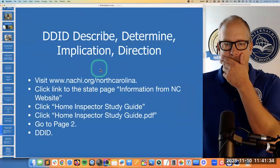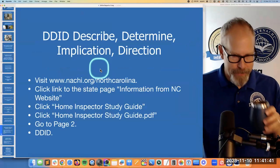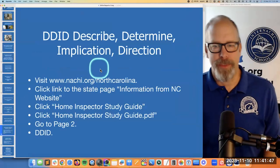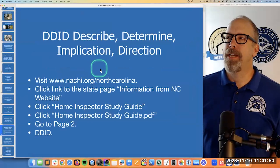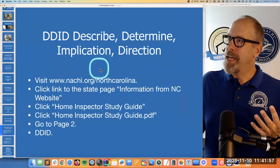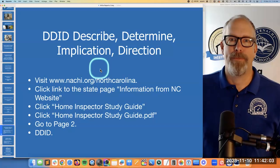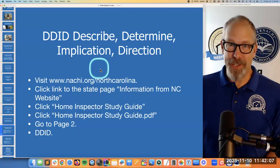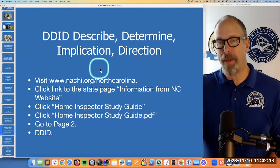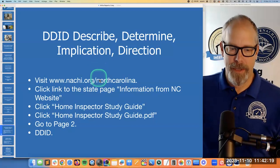DDID — this is something unique to North Carolina. It stands for Describe, Determine, Implication, Direction. Describe — I'm describing what I'm doing. Determine — I'm determining if what I'm looking at is a problem or not. Implication — is the problem small or big? Direction — I'm giving my clients direction on what to do. Go to nachi.org/NorthCarolina, then click the home inspector study guide PDF and go to page two.